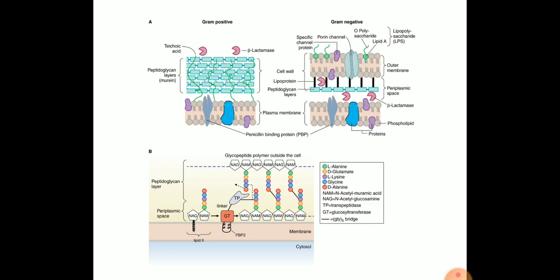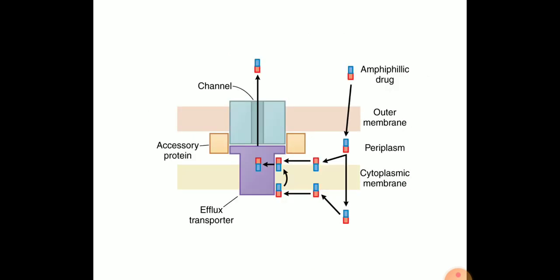The glycan part of the peptidoglycan is composed of repeated N-acetylglucosamine and N-acetylmuramic acid connected by beta-1,4 linkage.